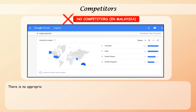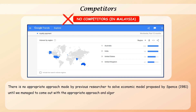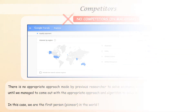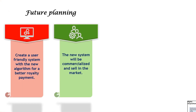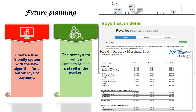There was no appropriate approach made by previous researchers to solve the economic model proposed by Spence, 1981, until we managed to come out with the appropriate approach and algorithm to solve it. In this case, we are the pioneer in the world. In the future, we plan to create a user-friendly system with a new algorithm for a systematic royalty payment system, which will then be commercialized and sold in the market.